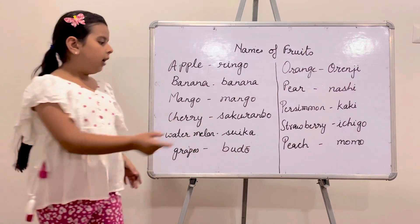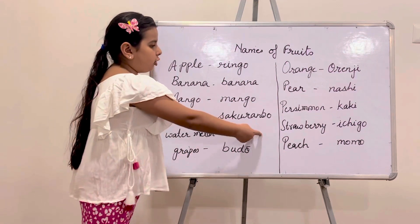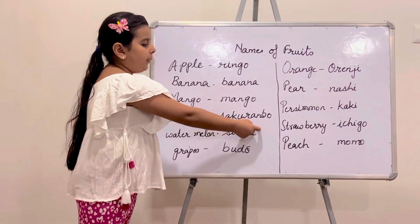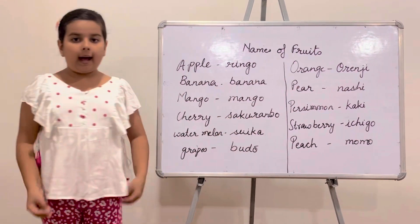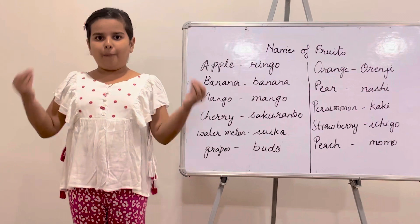The next fruit is Peach. Peach is known as Momo. Momo.